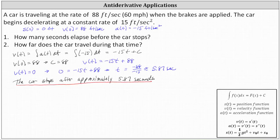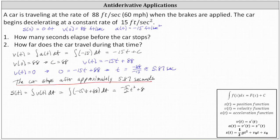Number two: how far does the car travel during that time? To answer this question, we'll first need to recover the position function s of t. We can do this because the velocity function equals the derivative of the position function, which indicates that s of t equals the integral of the velocity function dt, which equals the integral of negative 15t plus 88 dt. Integrating with respect to t, we have negative 15 halves t squared plus 88t plus c. We can determine the constant c because we know the initial position s of zero equals zero, so the constant c must equal zero. Therefore, the position function s of t is equal to negative 15 halves t squared plus 88t.